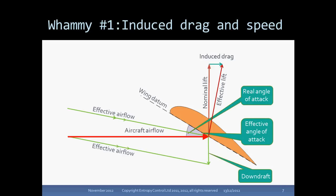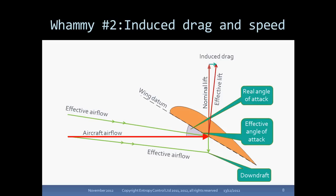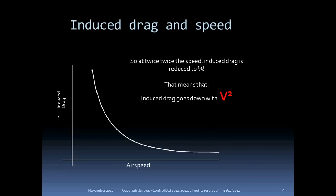So that was whammy number one. Whammy number two is that when you increase the airspeed, the length of that cylinder increases, which means that for a given lift you can use less downdraft, as Newton tells us. Starting with an airplane at double the original speed, we reduce the downdraft velocity. The reduction in downdraft again rotates the effective airflow round towards the horizontal, rotating the lift vector forward again and cutting the induced drag to that very small arrow at the top of the diagram. And so the induced drag goes down with the square of the speed and it reduces very rapidly as airspeed increases.